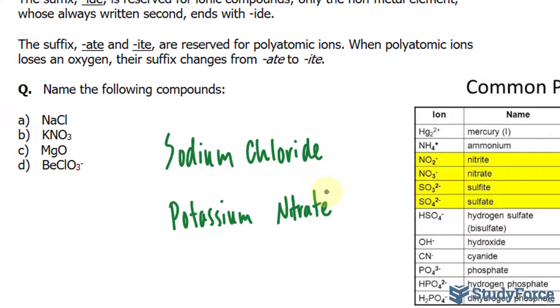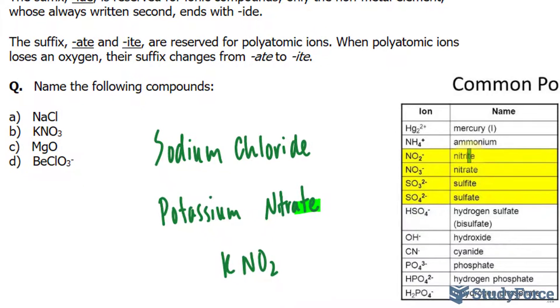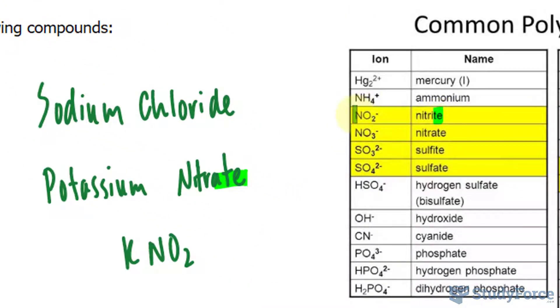Now hypothetically, had this been KNO2, rather than writing down nitrate, you would replace this -ate with -ite. You see, when the polyatomic ion has NO2, we call it nitrite, but when it's NO3, we call it nitrate.